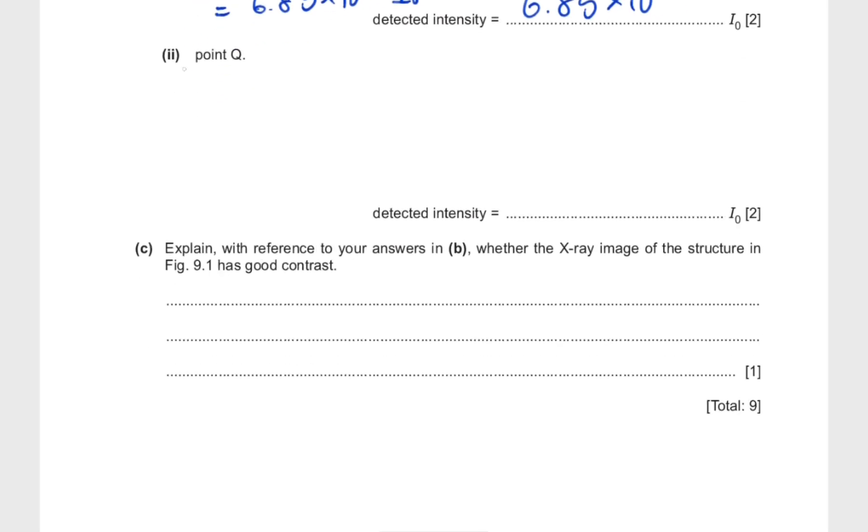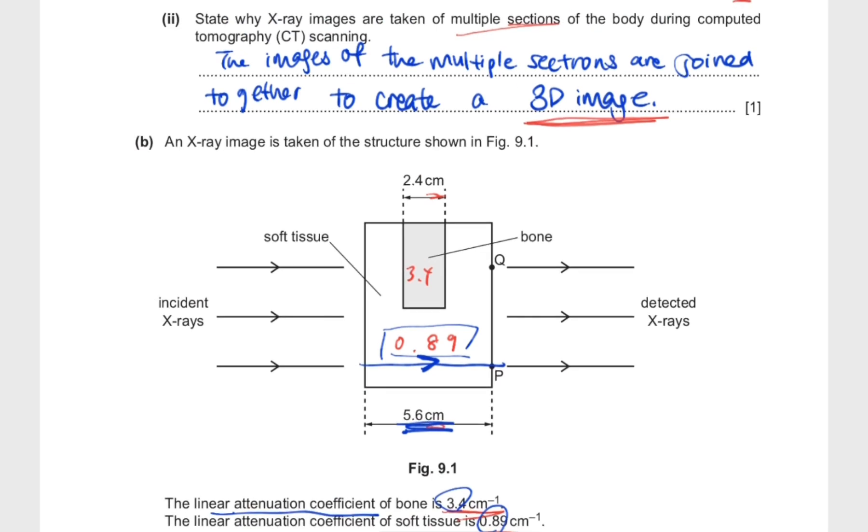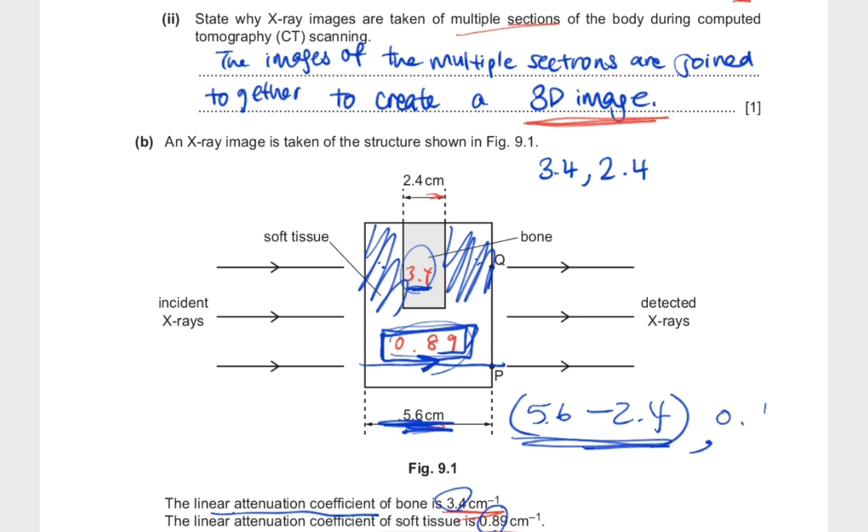Now we get into some more complicated territory, and they tell us to measure that of point Q. For point Q, it's a little bit more complicated because you have two regions with differing coefficients. The way you need to do this is you have to separate them out. It travels through a coefficient of 3.4 for 2.4 centimeters, and travels through a material of 0.89 for this length and also this length. If you do the math, the total of these two parts would be 5.6 minus 2.4.